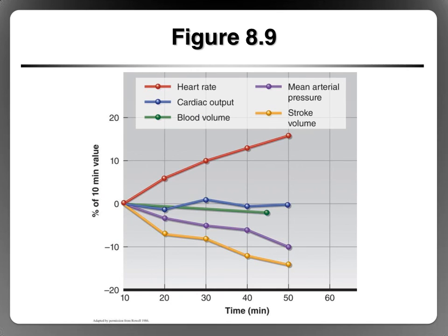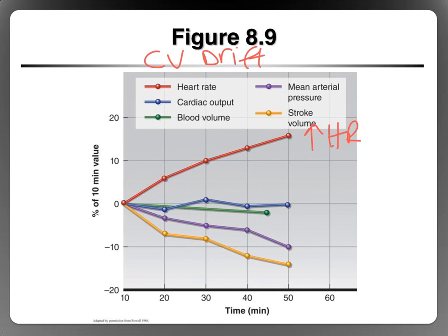As you can see on this chart, over time cardiac output is maintained, stroke volume goes down, heart rate goes up, blood volume goes down as you're sweating and losing plasma, and mean arterial pressure goes down. So overall, the factors that occur during cardiovascular drift are: increased heart rate, maintained cardiac output, reduced blood volume, reduced blood pressure, and reduced stroke volume.